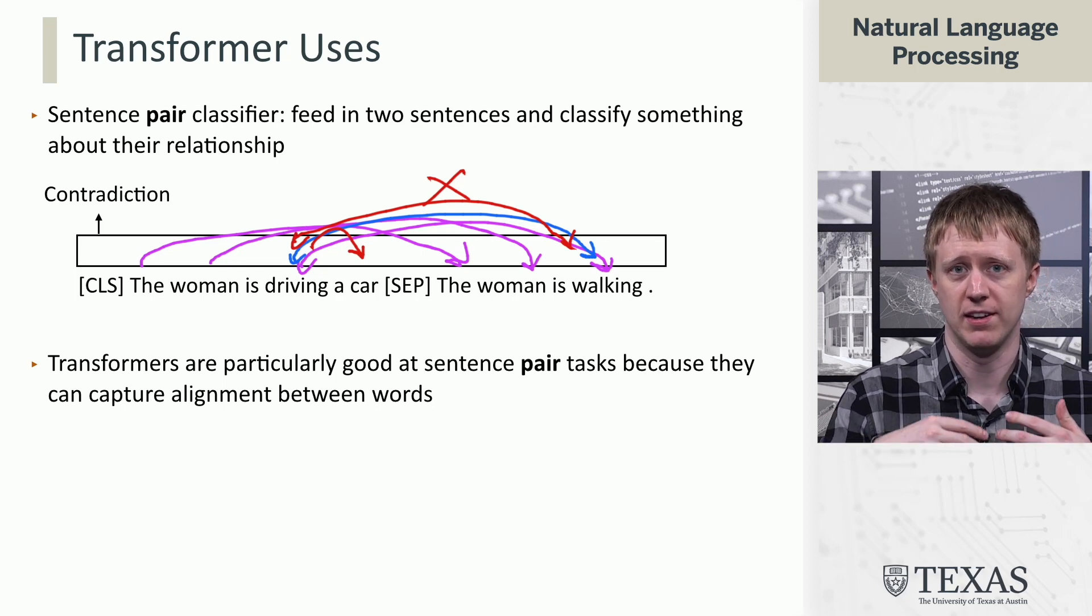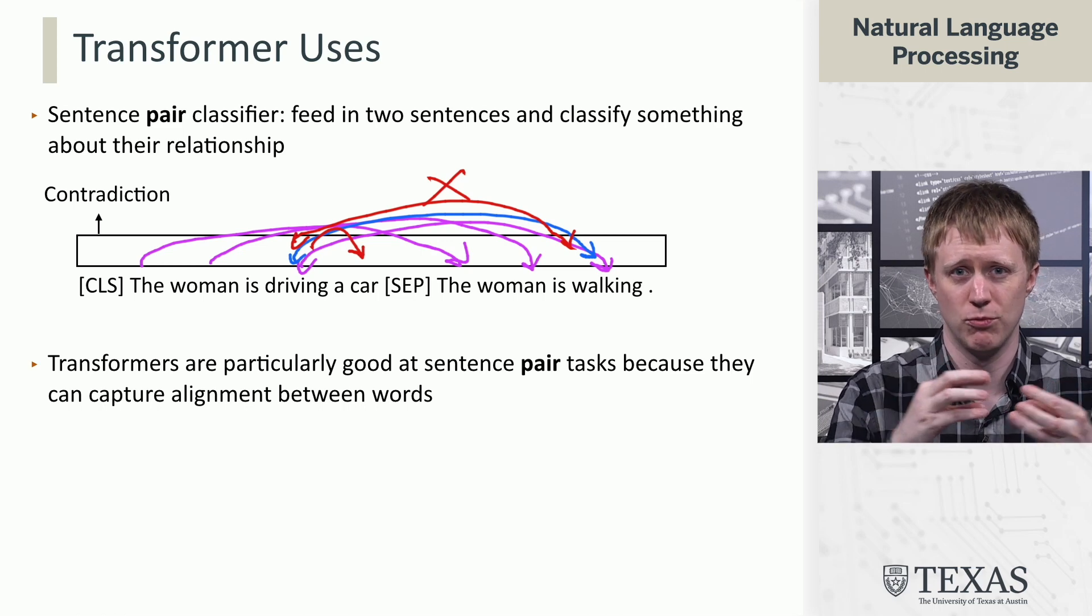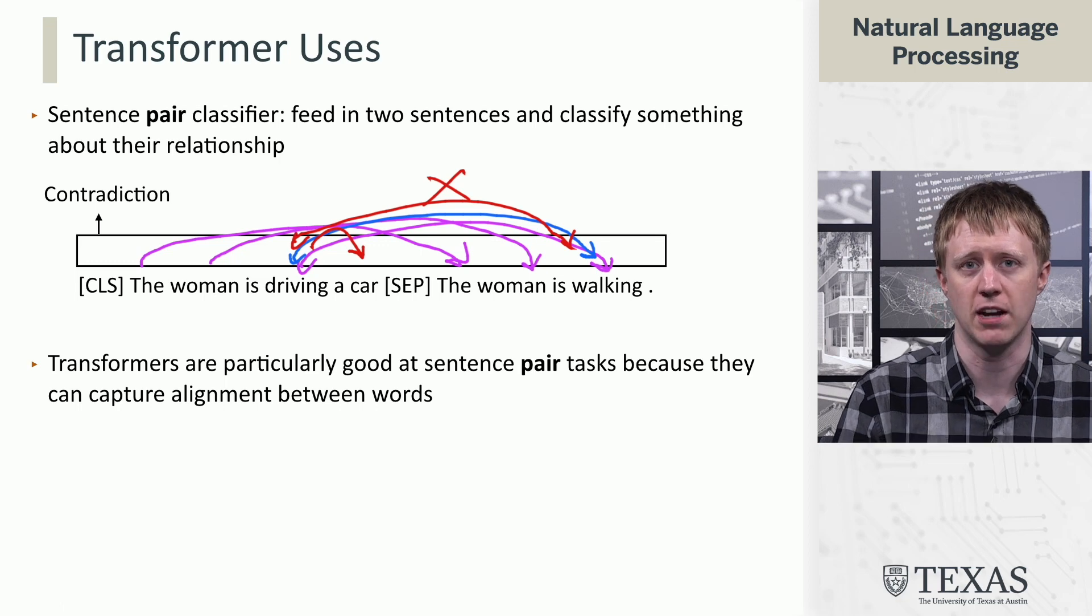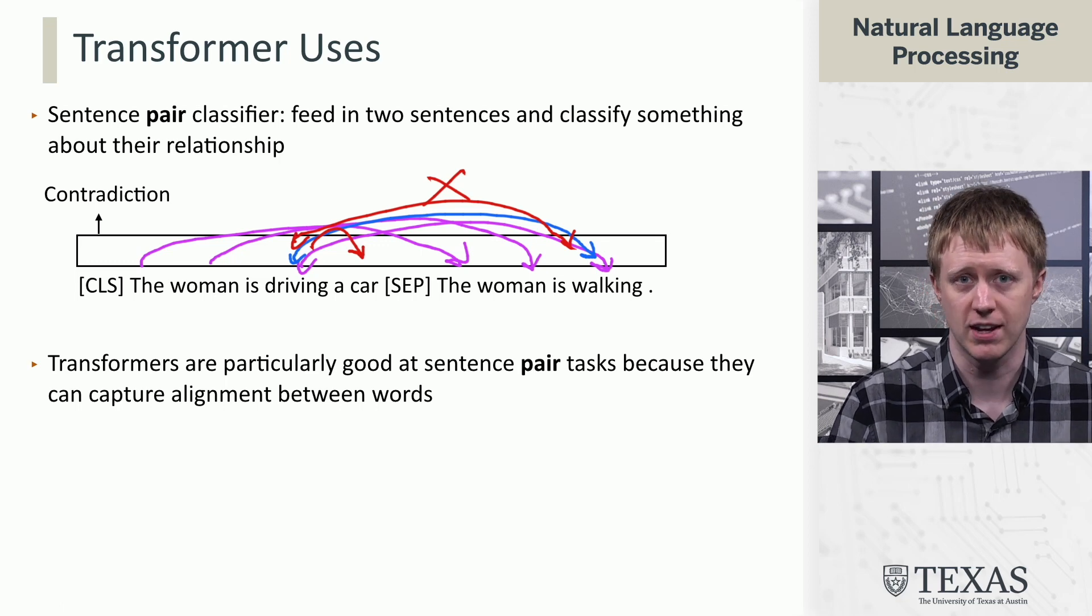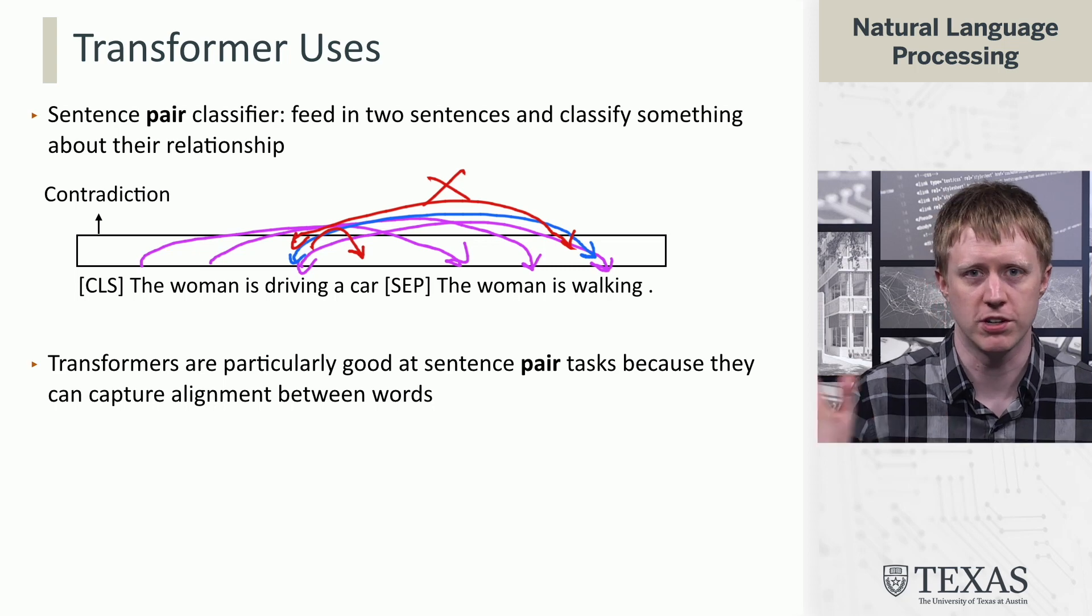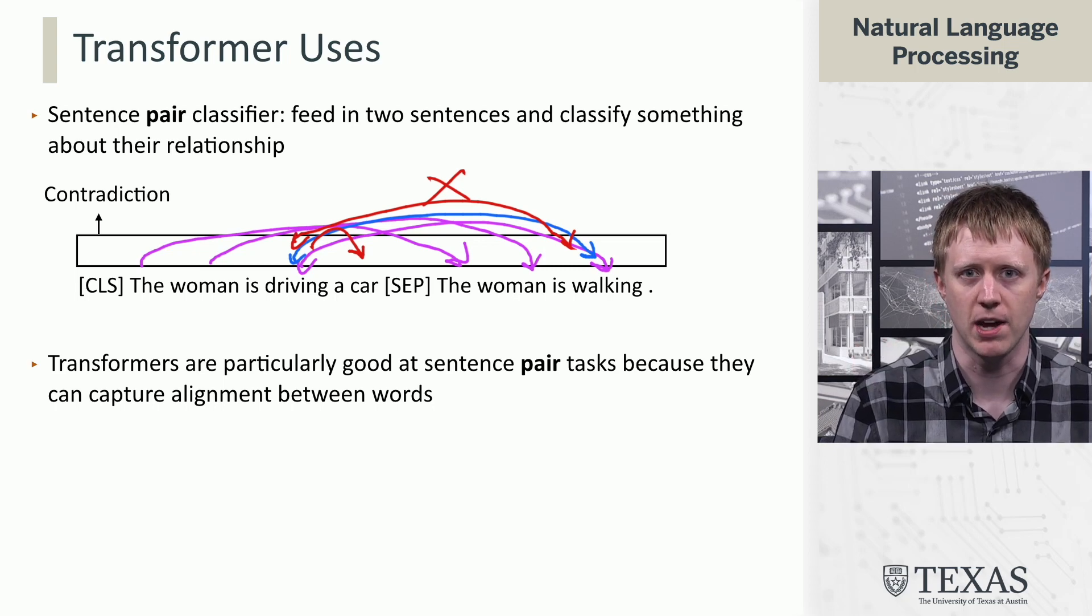They're really quite flexible because self-attention lets them align different parts of the input in different ways. And so you don't need custom architectures to do things like sentence pair classification or document classification. You can just feed whatever text you have into it and see what comes out.